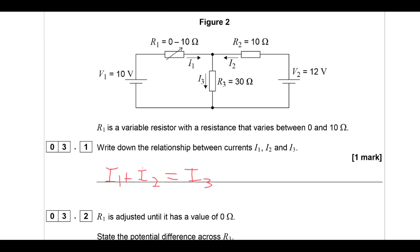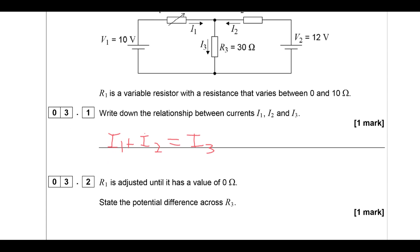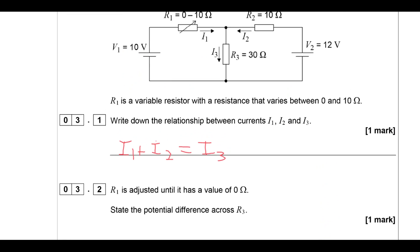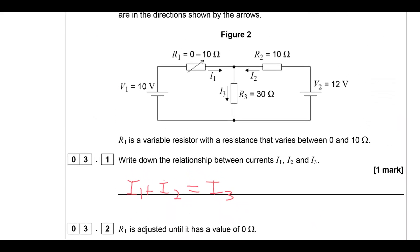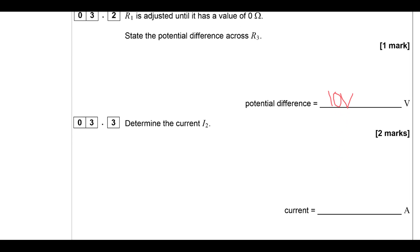We know this from Kirchhoff's series voltage law: the potential difference across R1 plus the potential difference across R3 must equal 10 V; and the potential difference across R3 plus across R2 must equal 12 V. Since R1 is 0, the potential difference across R3 is 10 V, so the PD across R2 must be 2 V. Current I2 equals potential difference divided by resistance: 2 V / 10 Ω = 0.20 A to two significant figures.